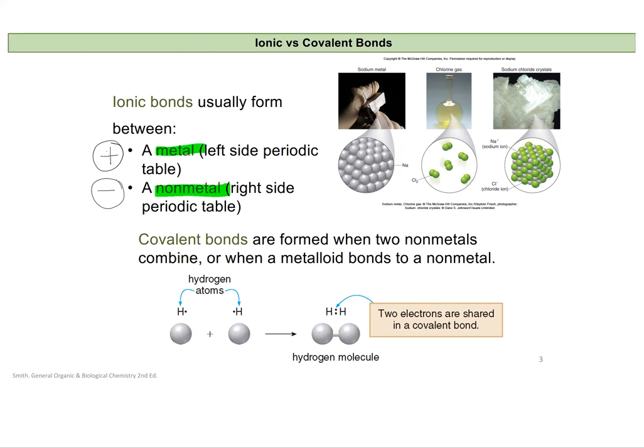Covalent bonds are then going to form when two things are actually shared. And so we're going to see that happen more with two nonmetals or between a metalloid and a nonmetal. So this will take place in kind of that upper right hand corner of the periodic table.